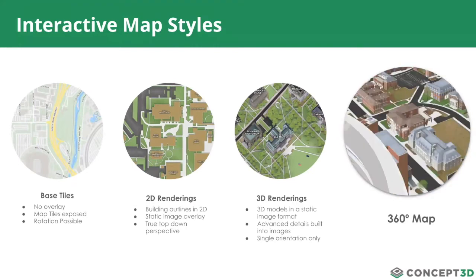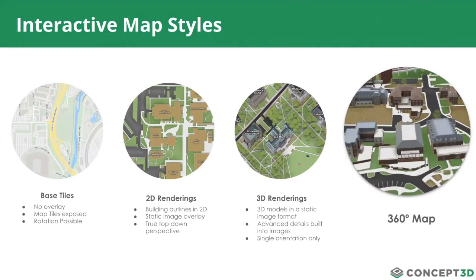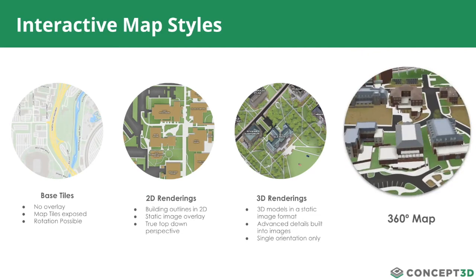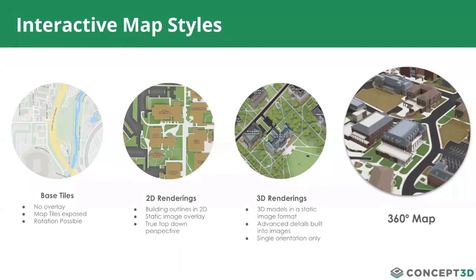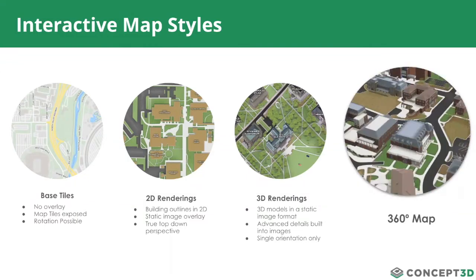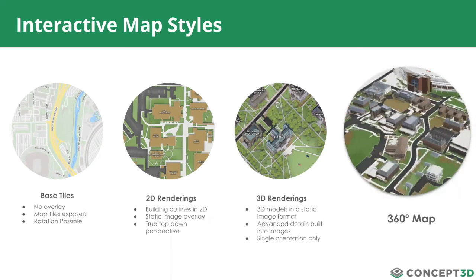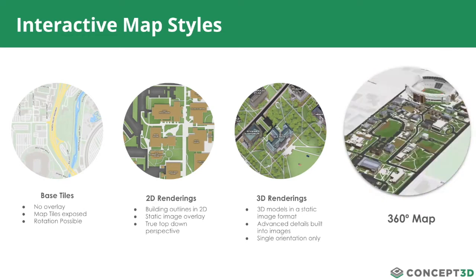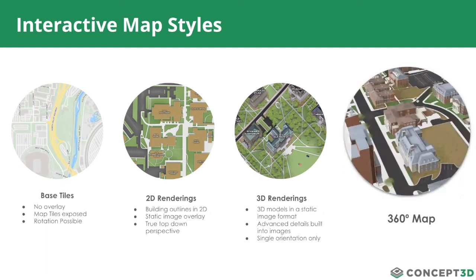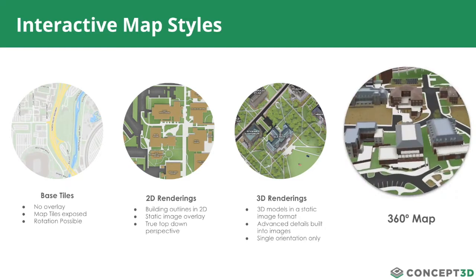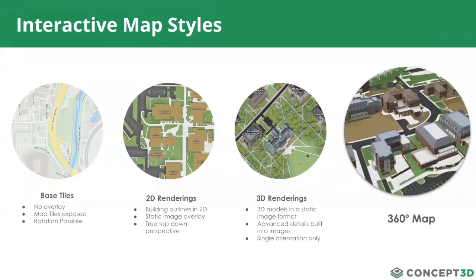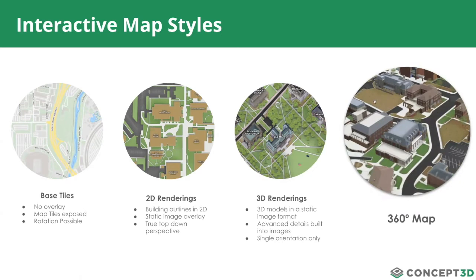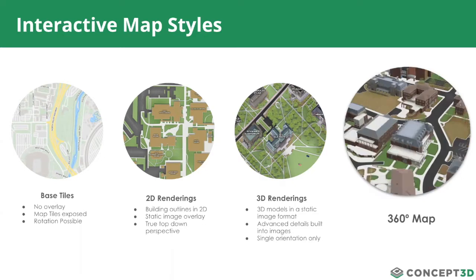Let's talk a little bit about the interactive map styles that exist today. Moving from left to right, at a basic level, we have our base tiles within the interactive map — some maps might not have any rendering or art overlay, and pins are simply dropped directly onto that base tile. With base tiles, rotation is possible because there isn't any art layer on top. Next, we have a simplified version, which we consider 2D renderings — a simplified building outline that still shows paths, sidewalks, and parking lots. Then you have 3D renderings, which is our most common map today — a static image format, locked to north orientation, but with a good level of detail including building windows, textures, landscapes, statues.